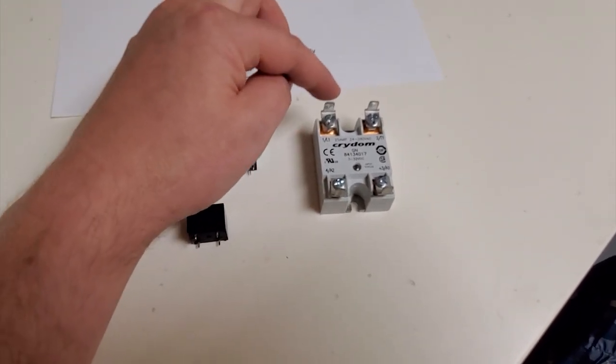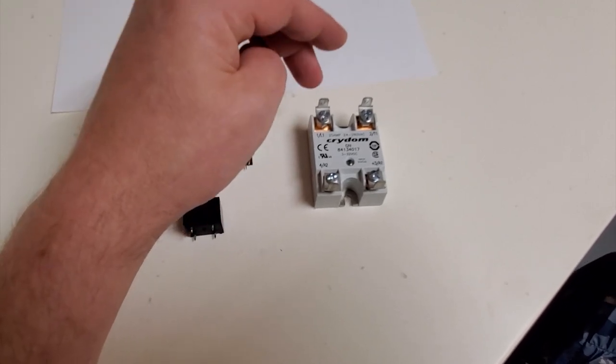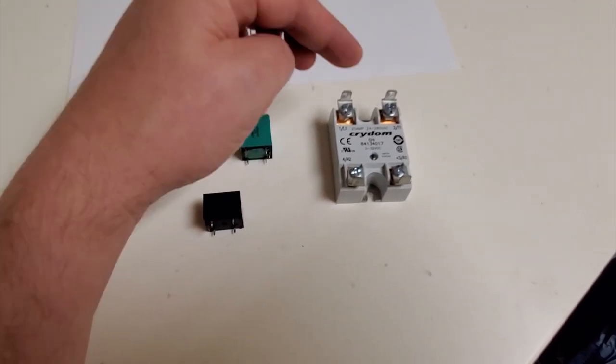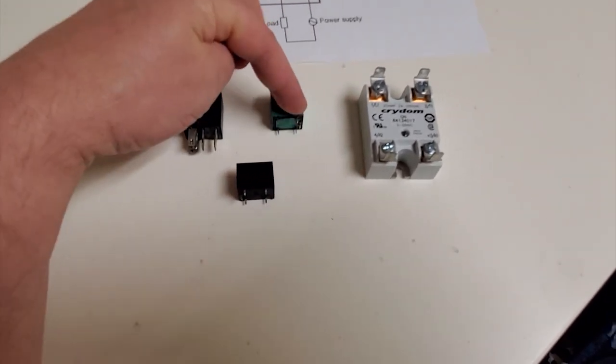And the way to troubleshoot the output side is you take a voltage measurement with your multimeter. Now, since this is a triac, there is going to be a voltage drop of a volt to two volts. Unlike a mechanical relay, where you're going to have zero volts potential difference between the output pins.